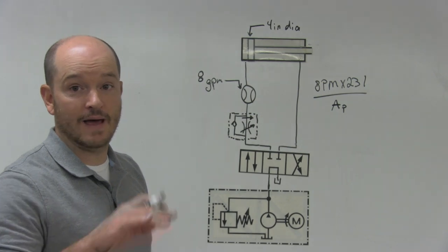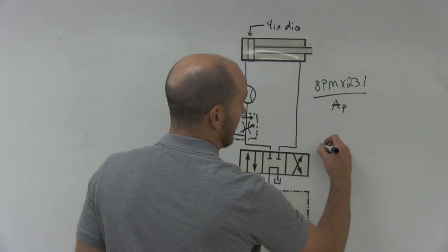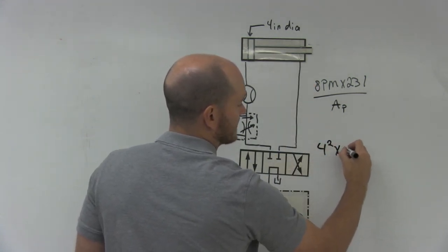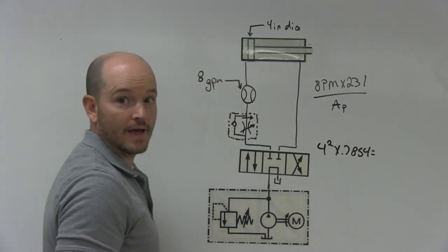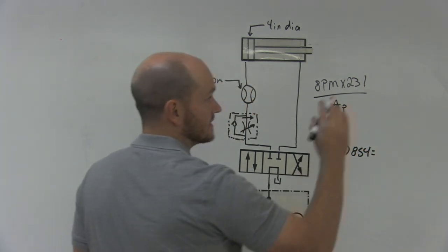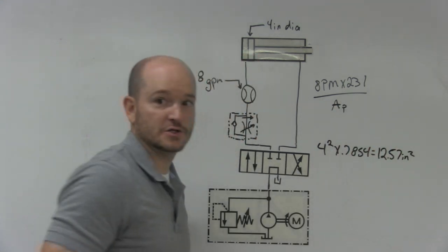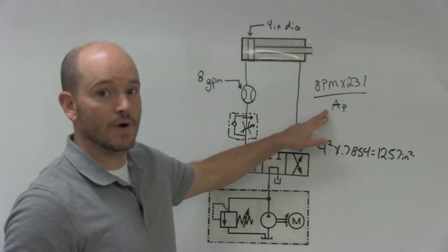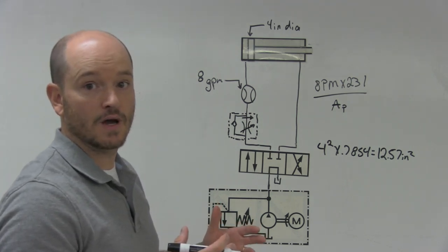Now I have some other videos on that, but I'll run you through the formula really quick. It's just going to be the area squared, which is 4, times 0.7854. That would give us 12.57 inches squared. So this is what would get plugged into this area right here in this formula. So let's go ahead and apply this and see what we come up with.